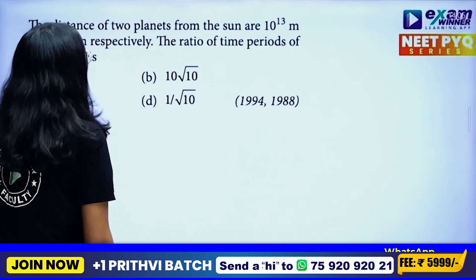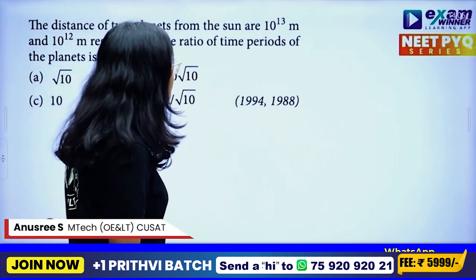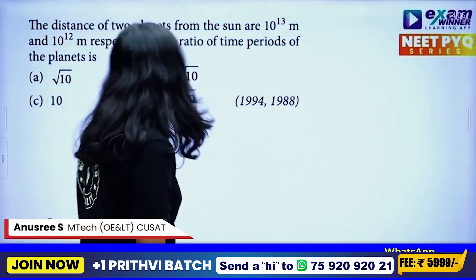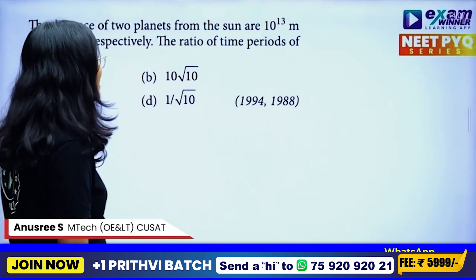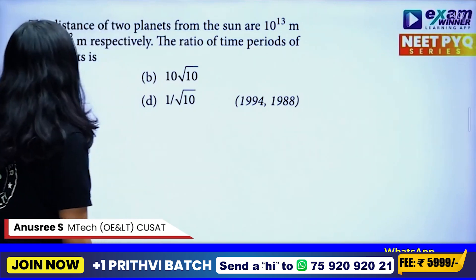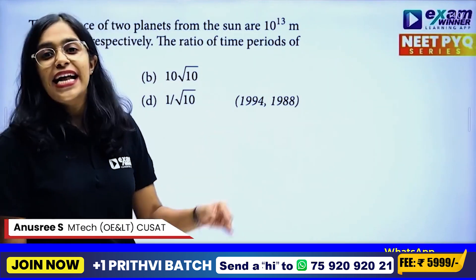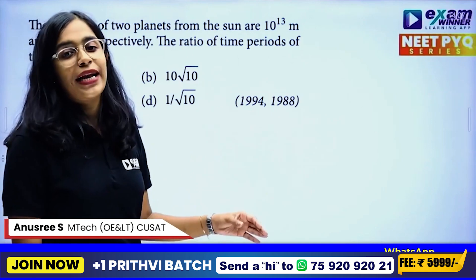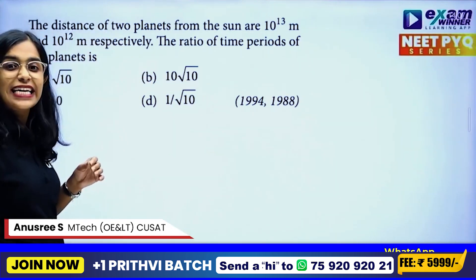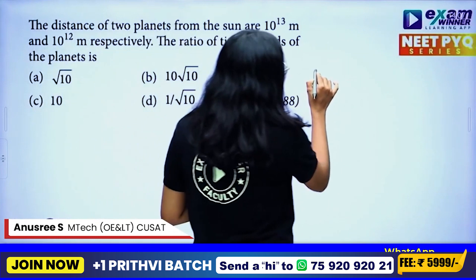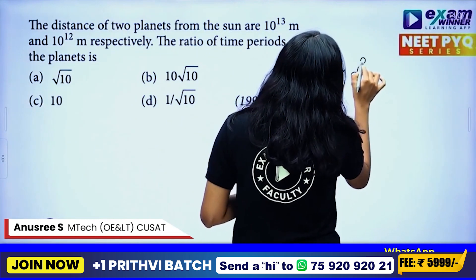The distance of two planets from the Sun is 10^13 meters and 10^12 meters respectively. This is the ratio of the time period of planets. We call the distance of the time period. T squared is proportional to R cubed.